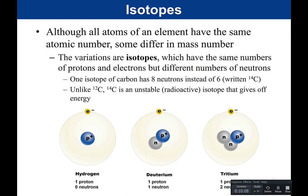Although all atoms of an element have the same atomic number, some differ in mass number. You cannot change the number of protons or you change the element. So if an element differs in its mass number, that tells you the component of the atom that changes is not the proton but instead is the neutron. If the atom changes its number of neutrons, we call it an isotope. Isotopes have the same number of protons and electrons, but a different number of neutrons.